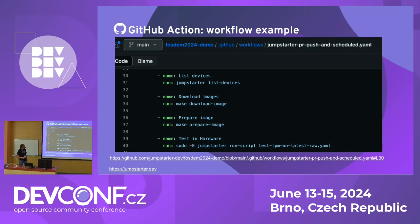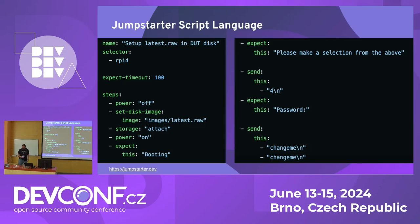This is how your GitHub Actions script will look. You will be talking to JumpStarter already installed on the host. This example lists devices, downloads an image — a Fedora or Raspbian image — prepares the image by installing the application, and then runs a script to test it on the hardware. In this case it was testing that the TPM drivers were working on our device. It's a very simple YAML format so far.